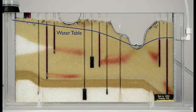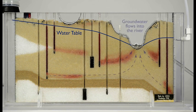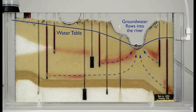The water table slopes down towards the river valley. Groundwater flows through the ground along fractures or through spaces between the grains, from areas where the groundwater level is high towards the river where the groundwater level is lower.